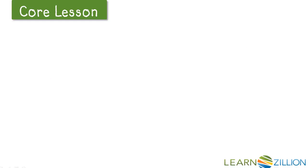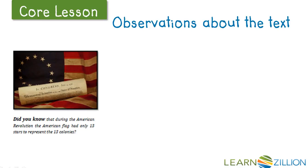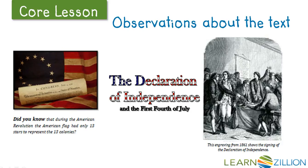Before we start filling in our K column, let's think about what it means to make observations about the text. This is our first step in determining what we already know about the topic of our article. To make an observation, you're simply glancing at noticeable text features that will give you a quick idea on the topic. The title and photos are examples of features that will help us make observations.